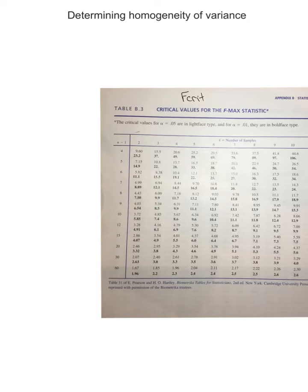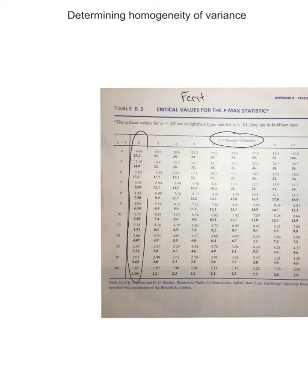Let's start with some of the letters. K is the number of samples. At this point in t-testing, we're just going to be dealing with two samples. So when you print off your F-max table, just circle the K=2 column and note that this is for t-tests.